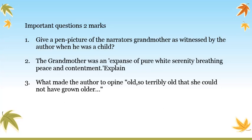For the second question, explain why the grandmother has been compared with an expanse of pure white serenity and why the author compared her with snow-capped mountains. She looked peaceful, happy, and content — she was a living example of pure white peace. For the third question: what made the author say she was 'so terribly old that she could not have grown older'? Write that she looked the same for 20 years and could not grow any older.